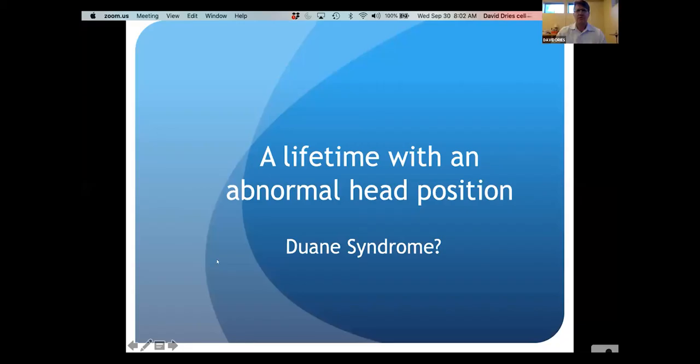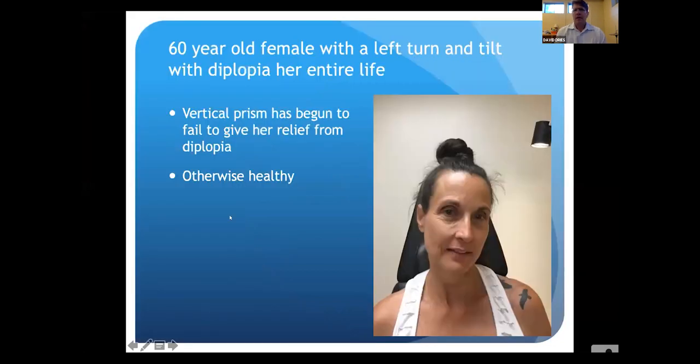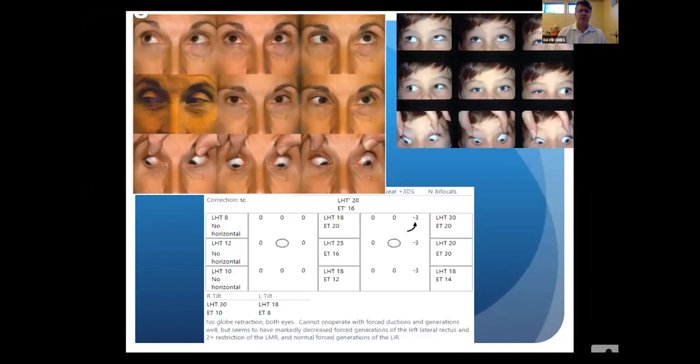This patient with Duane syndrome presents with an abnormal head position - a left turn and left tilt. She came mainly because vertical prism in her glasses was failing to give relief from her diplopia. Looking at her measurements, you can see she has a fairly large left hypertropia in primary gaze with alternate cover testing.